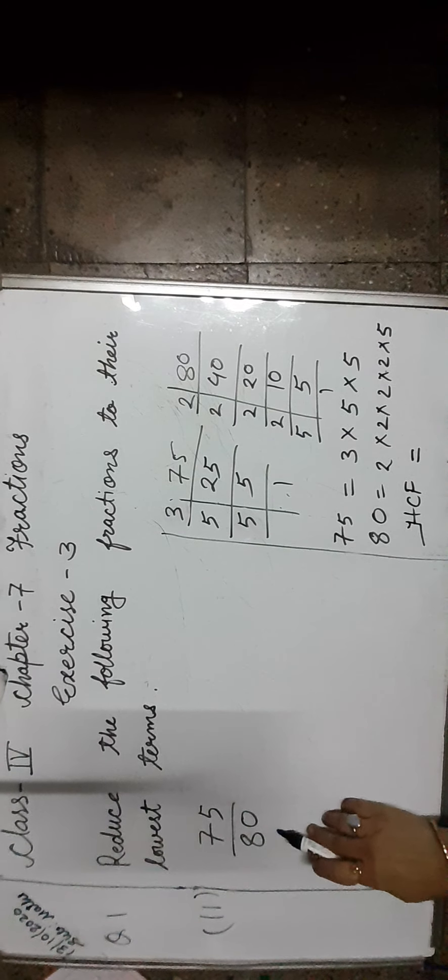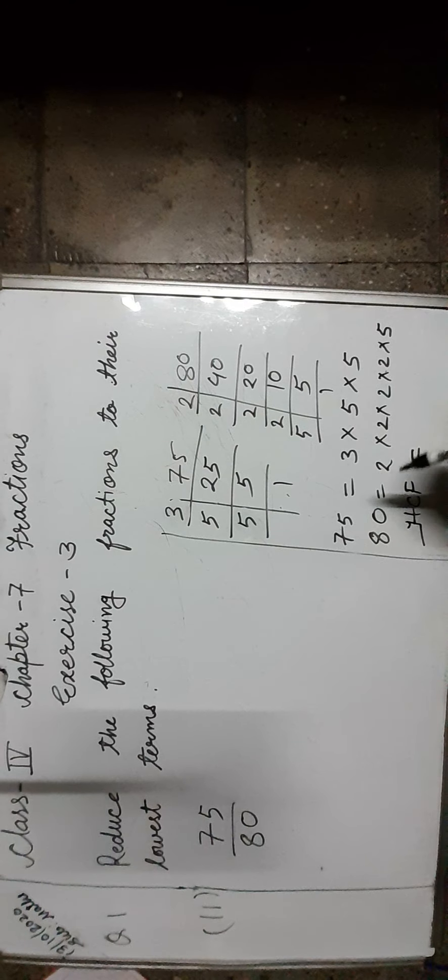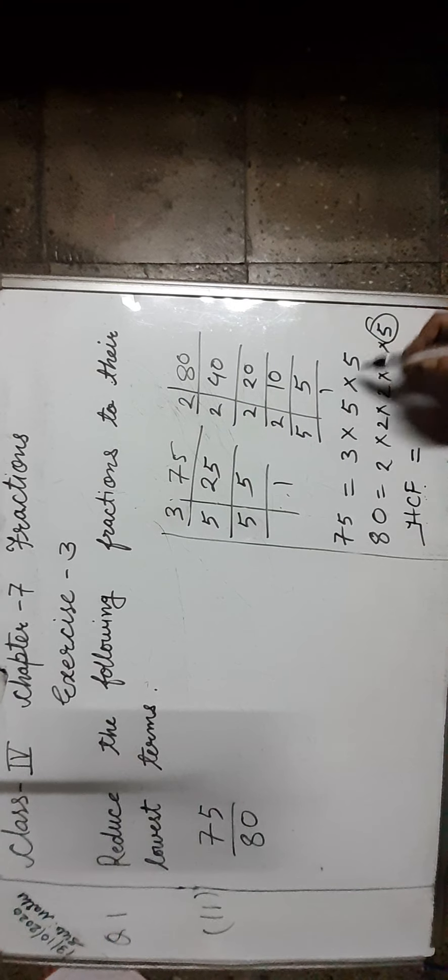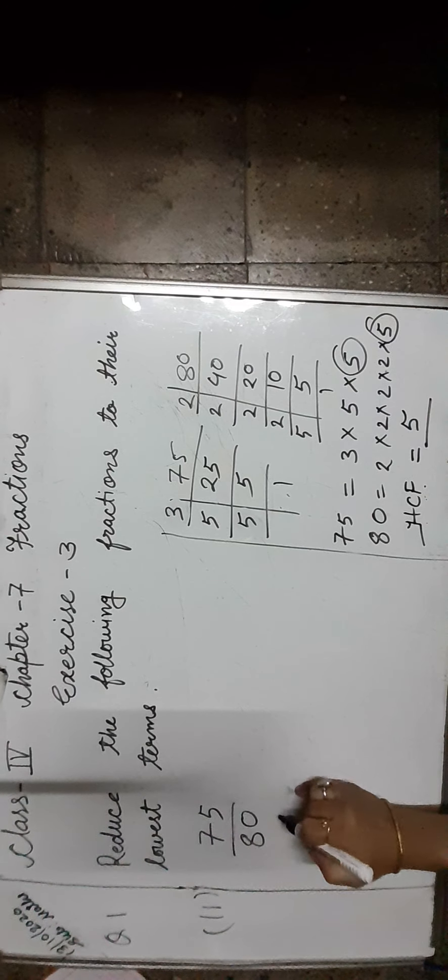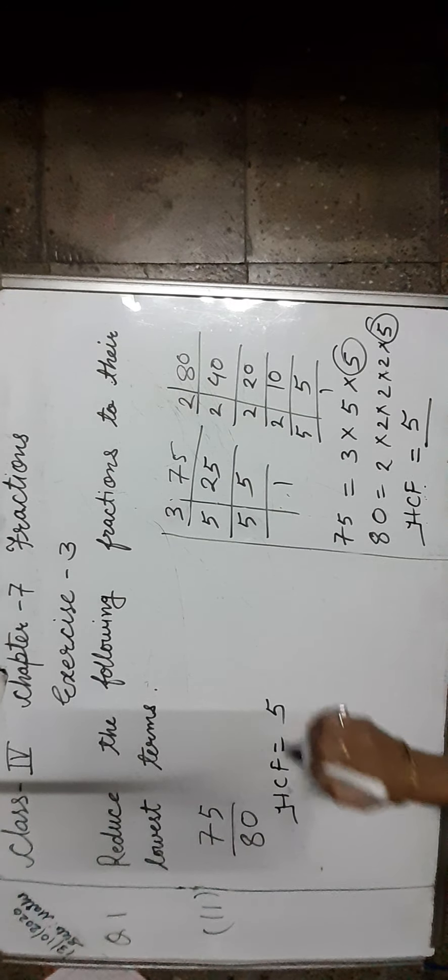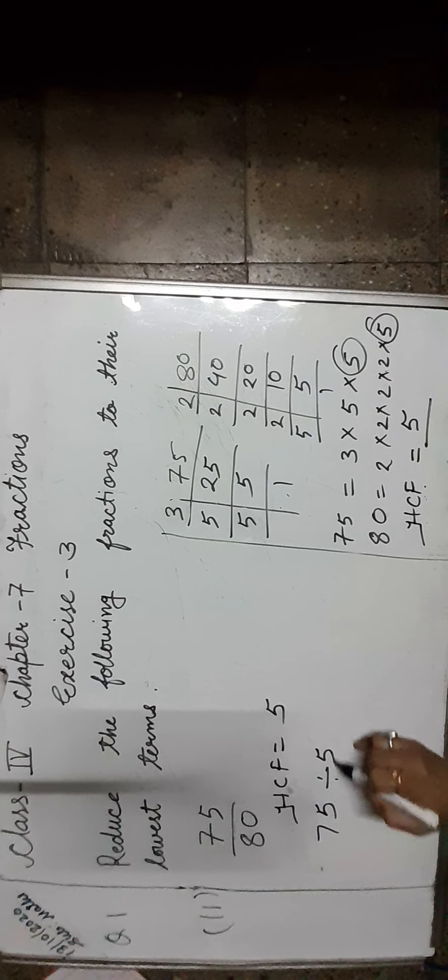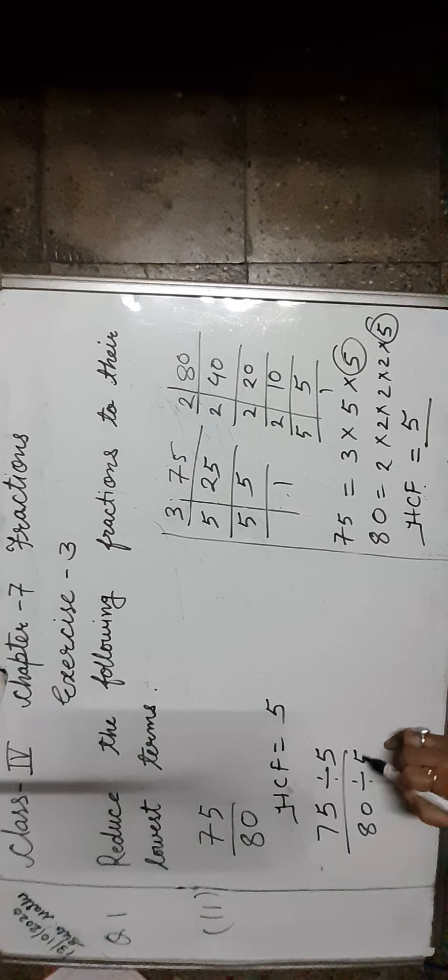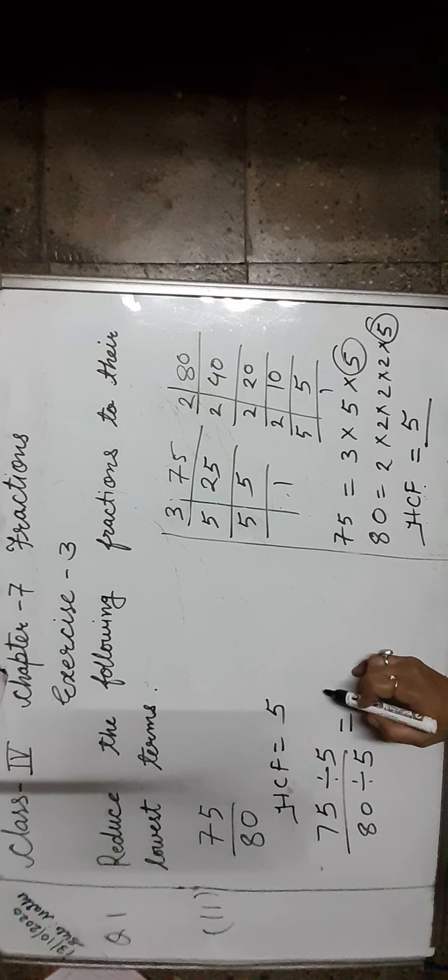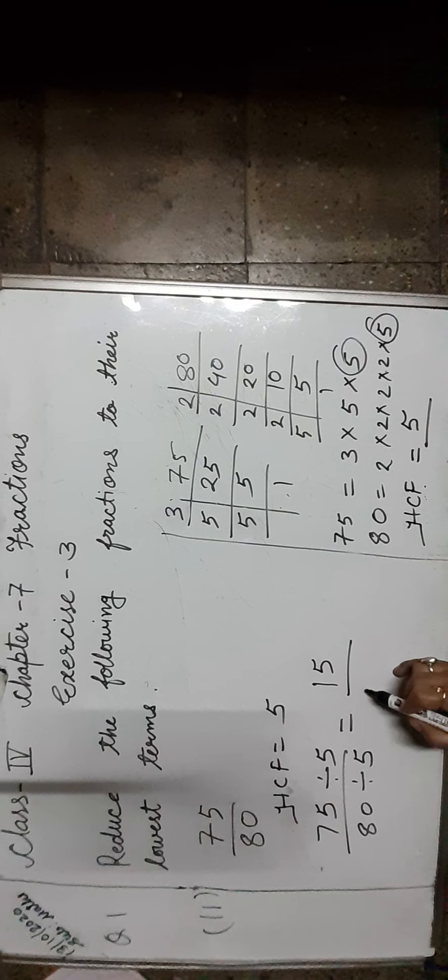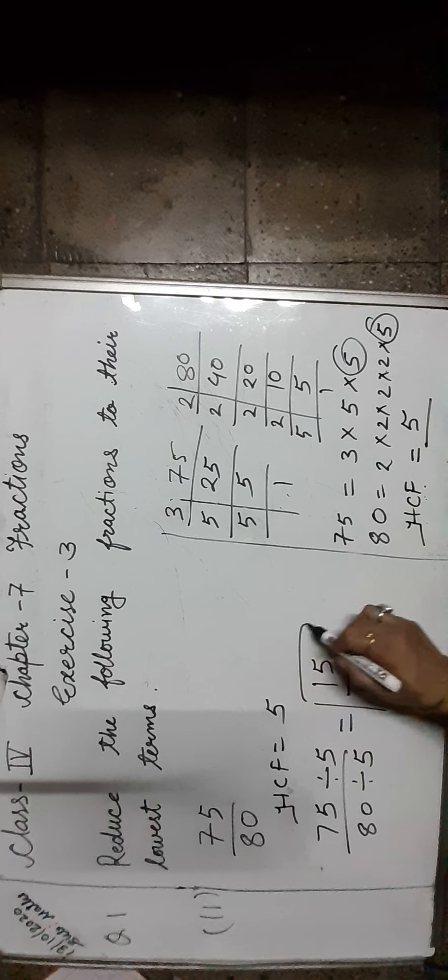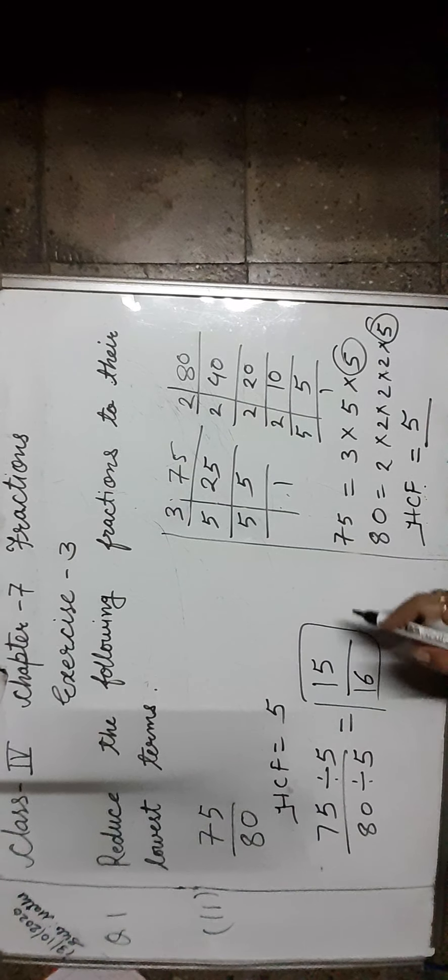Next one is 75 upon 80. Let us first find the highest common factor of 75 and 80, which is 5. HCF equals 5. Let us divide 75 by 5 and 80 by 5. When we divide 75 by 5, we will get 15, and 80 divided by 5 equals 16. So the lowest form of 75 upon 80 is 15 upon 16.